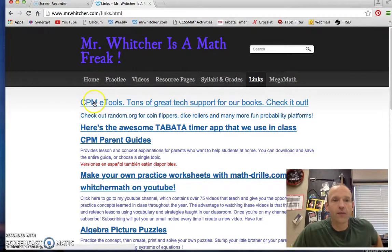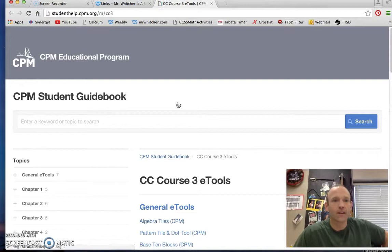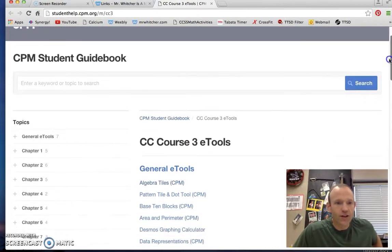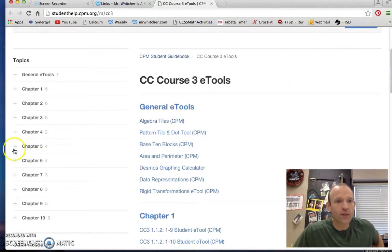and we're just going to navigate over here to the links. And then right up here, CPM e-tools. Hit that link. And then we have this little section here. We are in chapter 5.